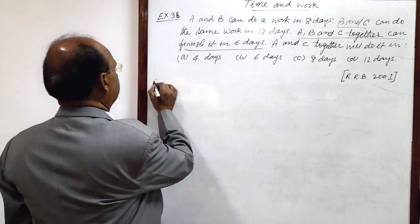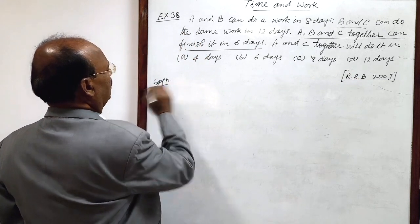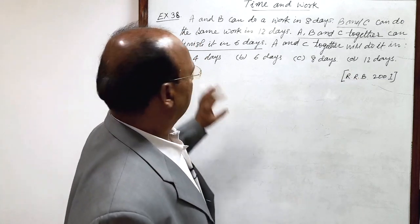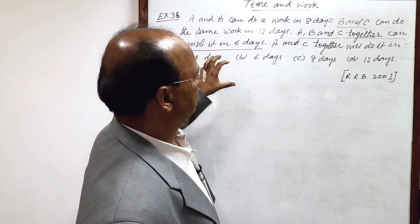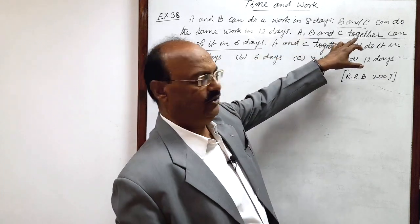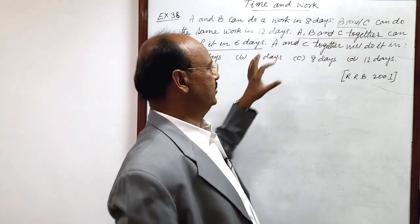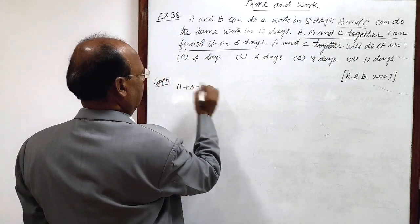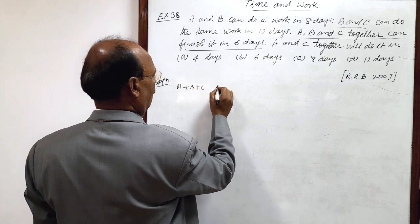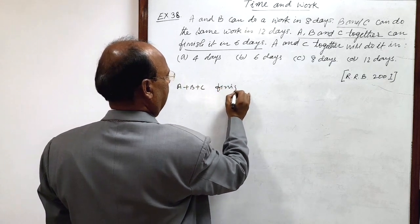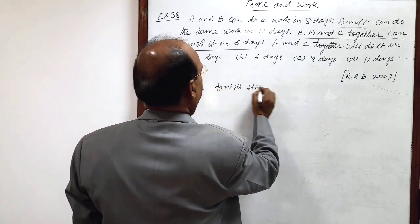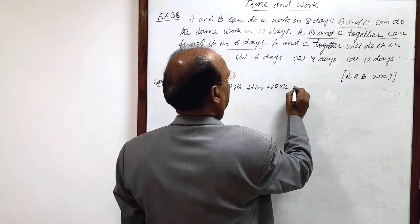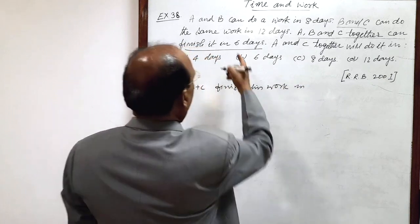Solution is very simple. Here first of all we will use the number of days required by A, B and C working together to finish this work. So A plus B plus C finish this work in 6 days.